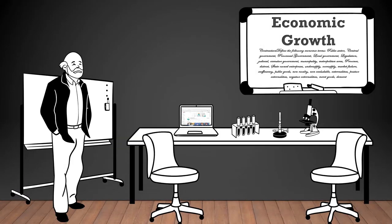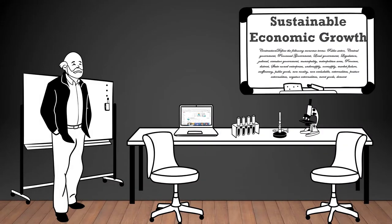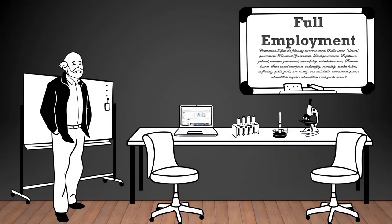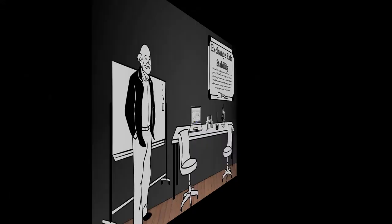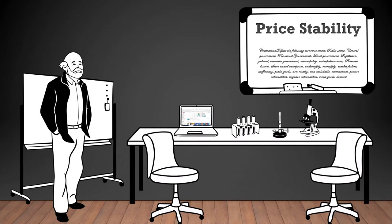Economic growth: the increase in the production and consumption of goods and services in an economy over time. Sustainable economic growth: economic growth that can be maintained over the long term without depleting natural resources or causing significant negative environmental impacts. Full employment: the situation where all willing and able individuals who are actively seeking employment are able to find jobs. Exchange rate stability: the situation where the value of a country's currency remains relatively constant against other currencies. Price stability: a situation where the overall price level in an economy remains relatively constant, avoiding significant inflation or deflation.